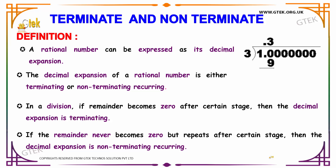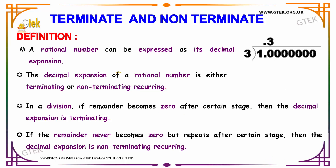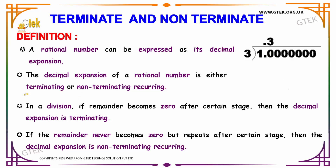Now let's discuss terminating and non-terminating. Let us have a clear idea of what these concepts are all about. A rational number can be expressed as its decimal expansion. The decimal expansion of a rational number is either terminating or non-terminating recurring. Terminating means it ends; non-terminating means it goes on.